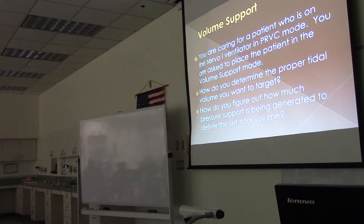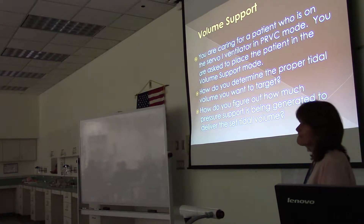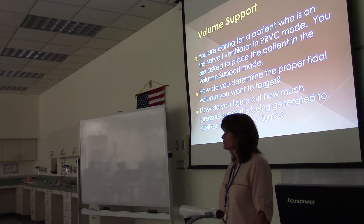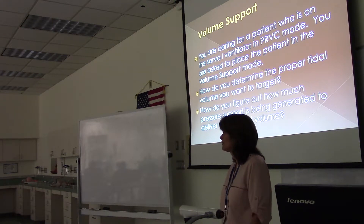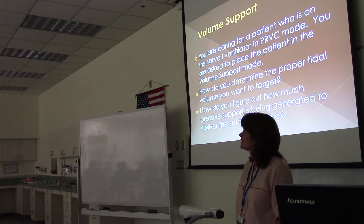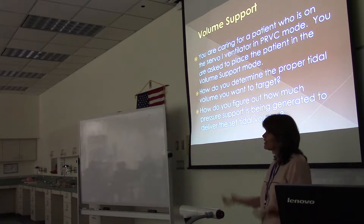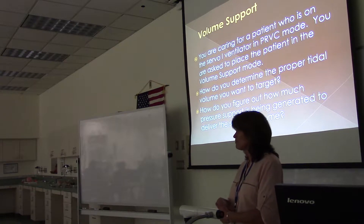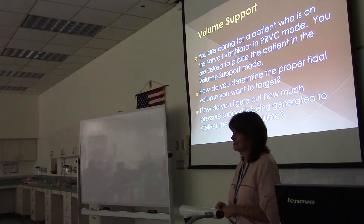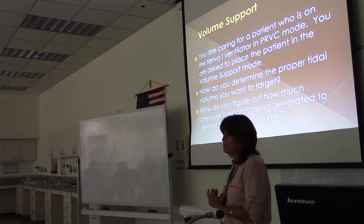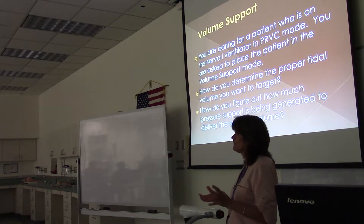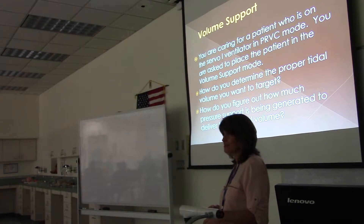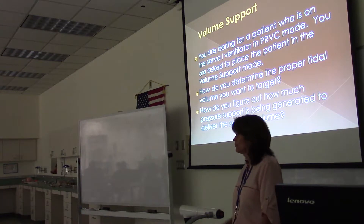And then how do you figure out how much pressure support is being generated to deliver the set tidal volume? What you look for is the peak pressure, subtract the PEEP — it's the delta peak — that's your pressure support setting. So what if you're in volume support and the peak pressure is like 30 centimeters of water and the PEEP is 5? That's a delta P of 25. And if you're getting normal tidal volumes back, what does that tell you about the patient's lungs and their ability to be weaned?